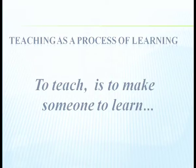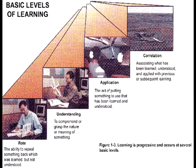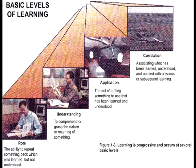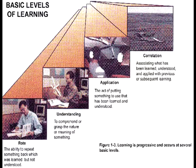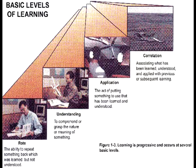Teaching as a process of learning: to teach is to make someone learn. The basic levels of learning are divided into four parts — rote, understanding, application, and correlation. Rote is the ability to repeat something without understanding the concept. Understanding means comprehending the meaning of something. Application is putting learned knowledge to use. Correlation involves applying knowledge with the help of prior knowledge.